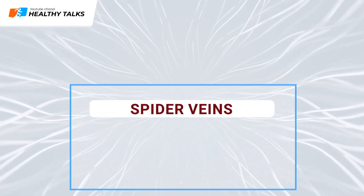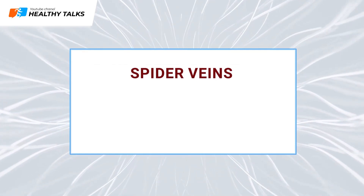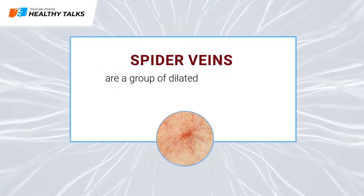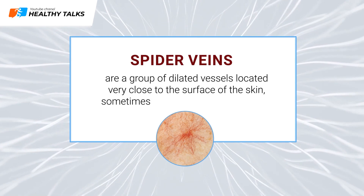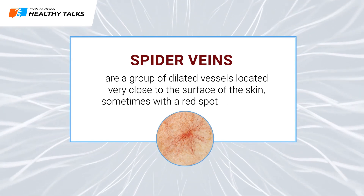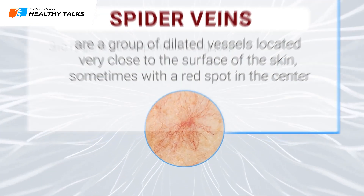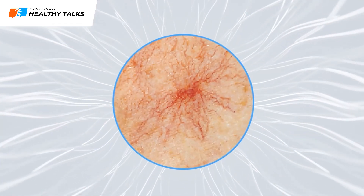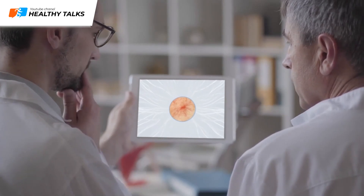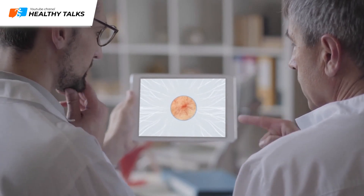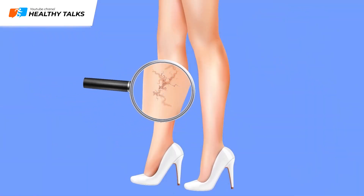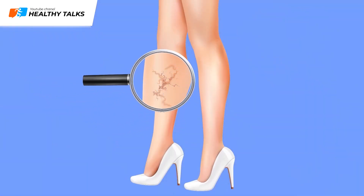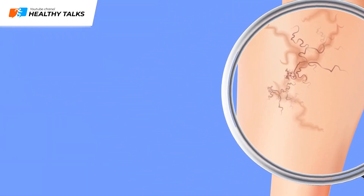Sign 2: Spider and varicose veins. Starburst or spider veins are groups of dilated vessels located very close to the surface of the skin, sometimes with a red spot in the center — they look like a spider web. A person with a sick liver usually notices several dilated vessels that appear at once, sometimes accompanied by the development of varicose veins.